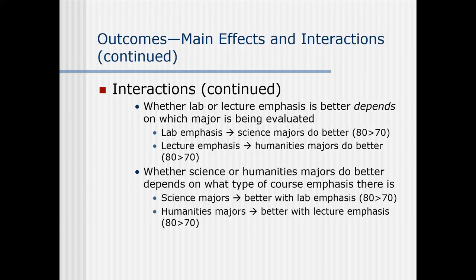To review: whether lab or lecture emphasis is better depends — and that's the key word — on which major is being evaluated. Lab emphasis: science majors do better. Lecture emphasis: humanities majors do better. Whether science or humanities majors do better depends on the type of course. Science majors do better with lab emphasis; humanities majors do better with lecture emphasis.